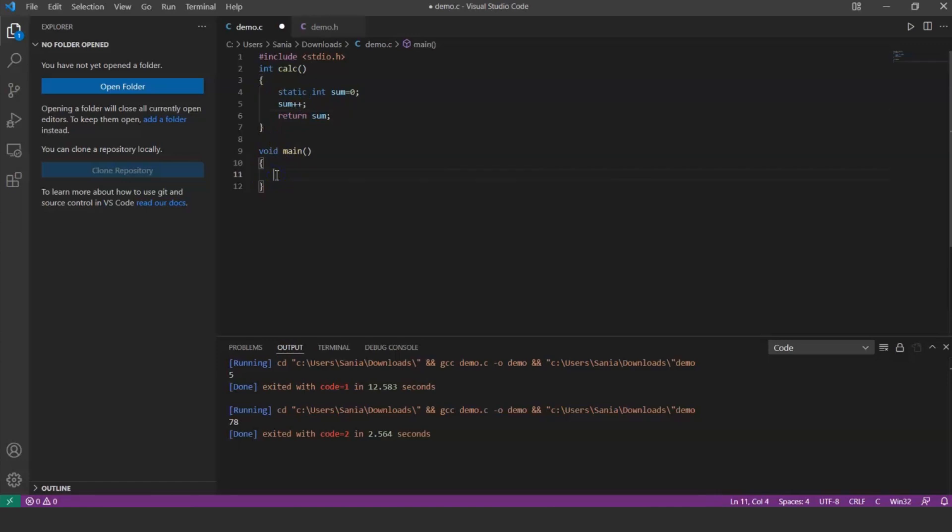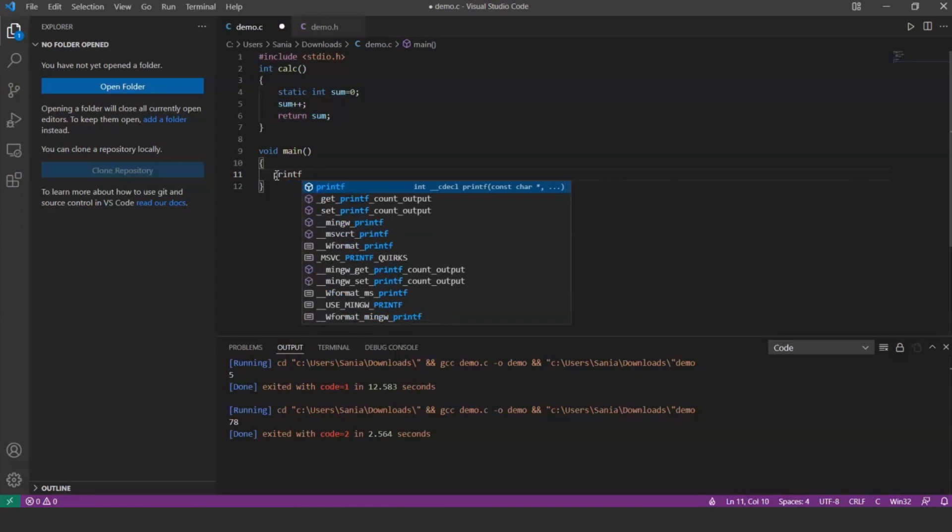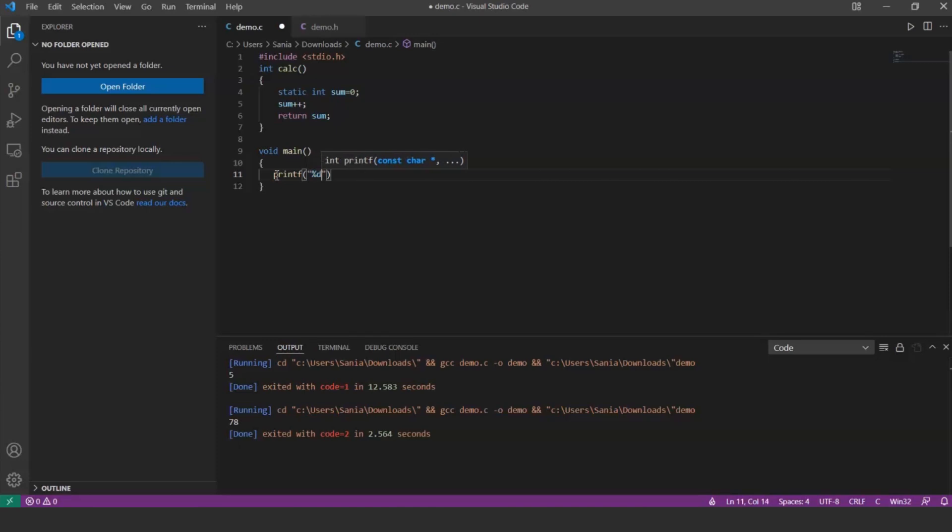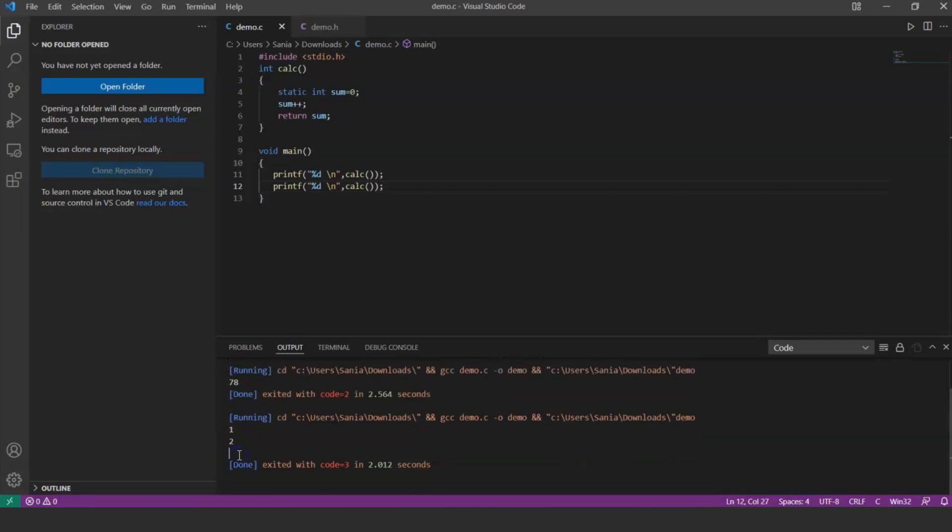Inside the main function, let's call the function two times. For every function call, the value of the static variable will increment and print new value. That means, the sum value was initially 0, and then incremented by 1, and printed value 1. Now the sum value is 1. The sum value will increment by 1 for the next function call and print the new value 2.